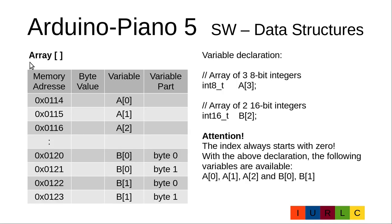If you want to store a lot of equal data, you can use the data structure array. An array declaration is as follows: you write the type of the elements, then the variable name, square bracket open, the number of elements, and square bracket closed semicolon. With this declaration you will get three elements beginning with the index of 0 — so you will get A[0], A[1], A[2].